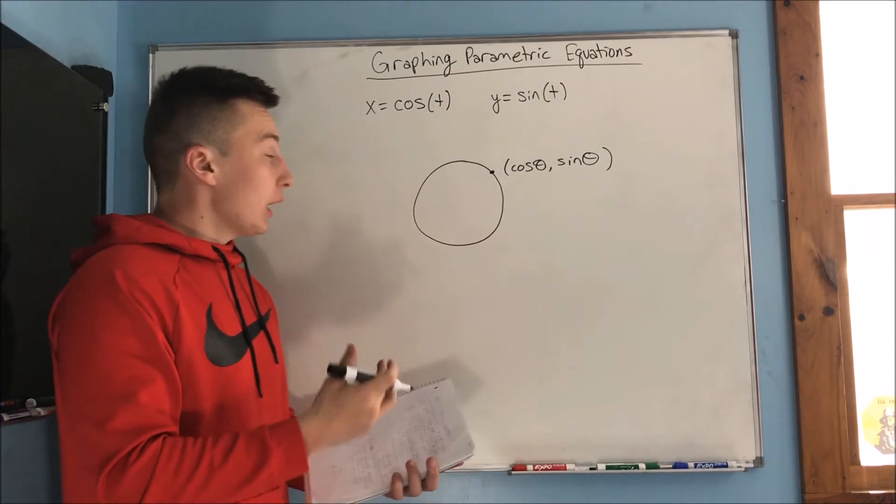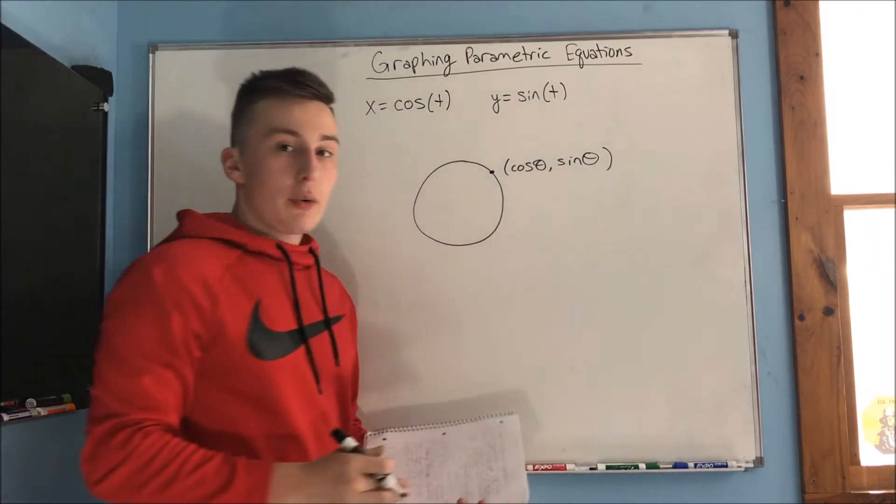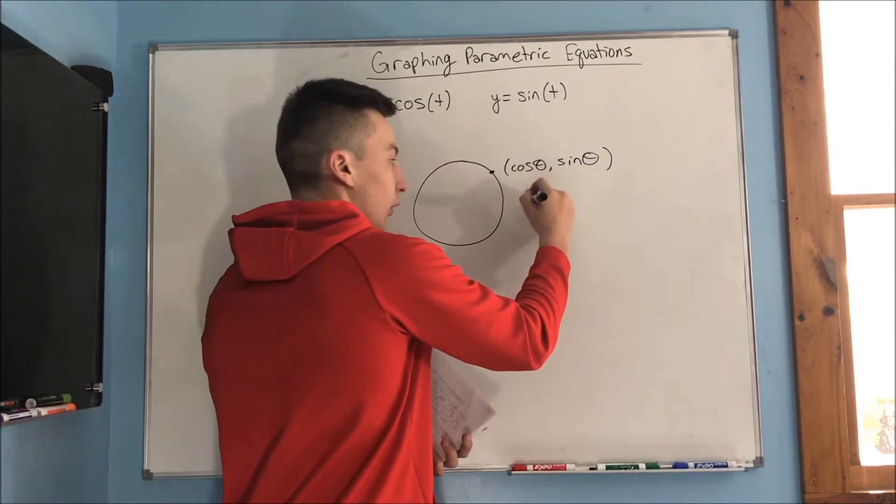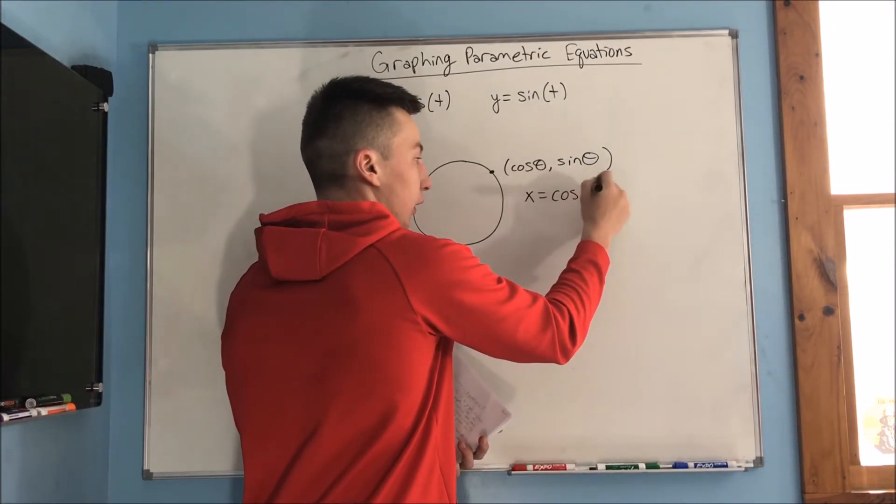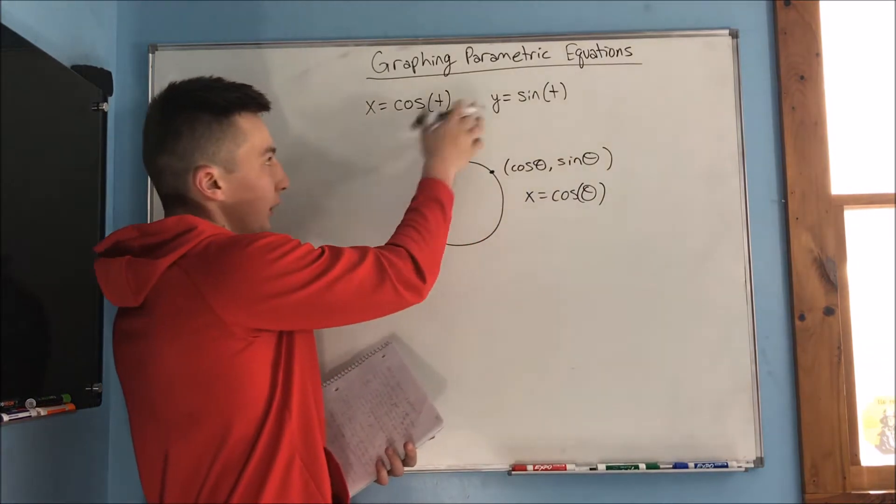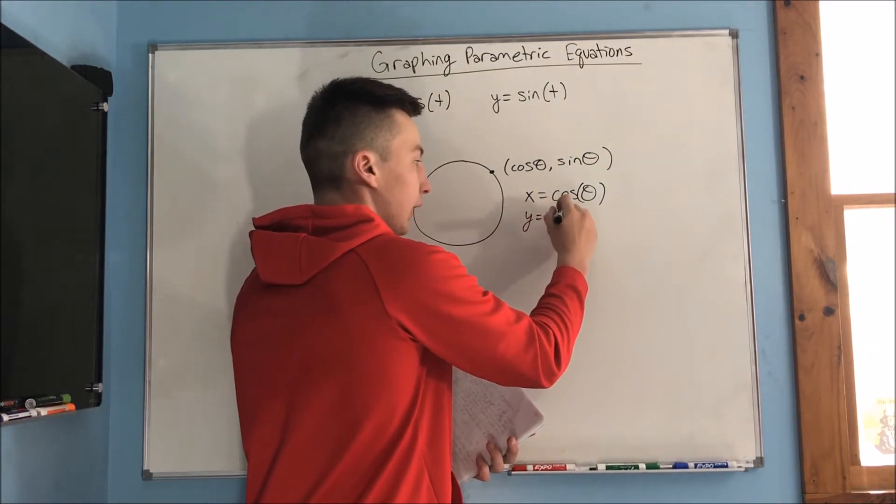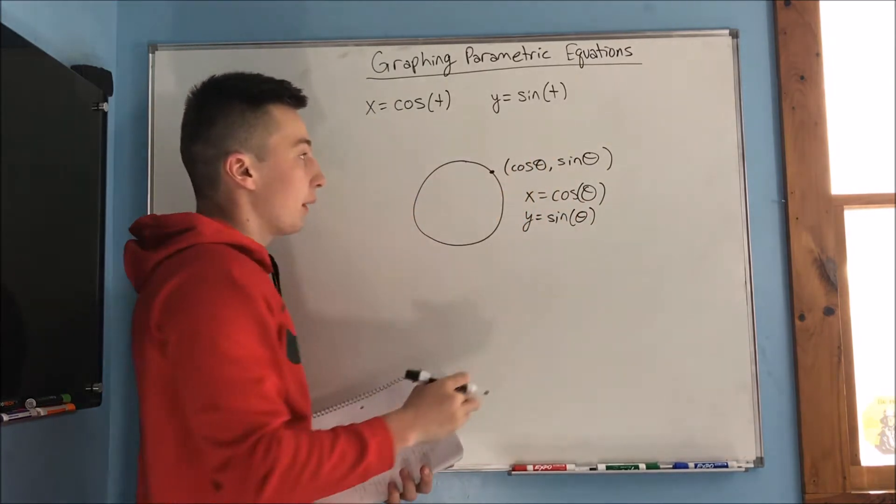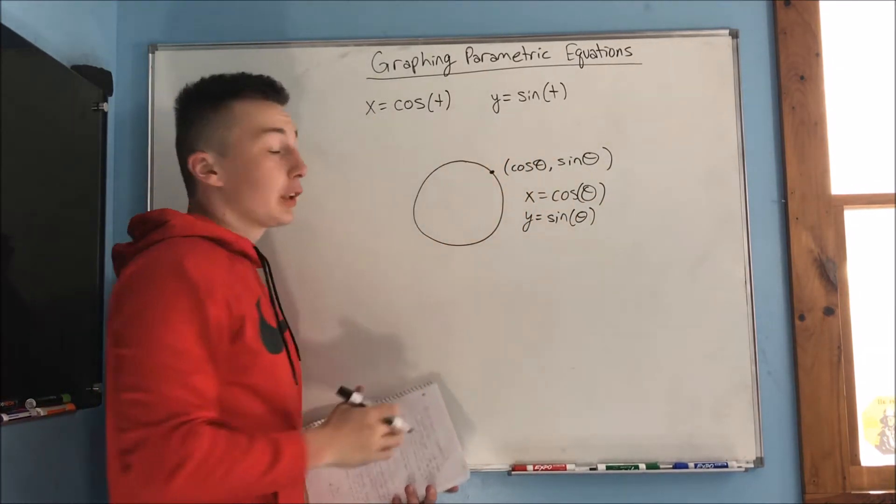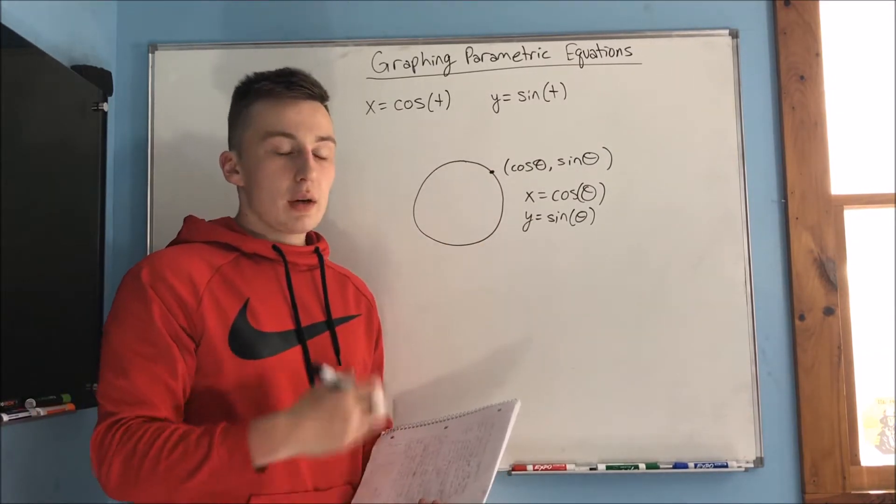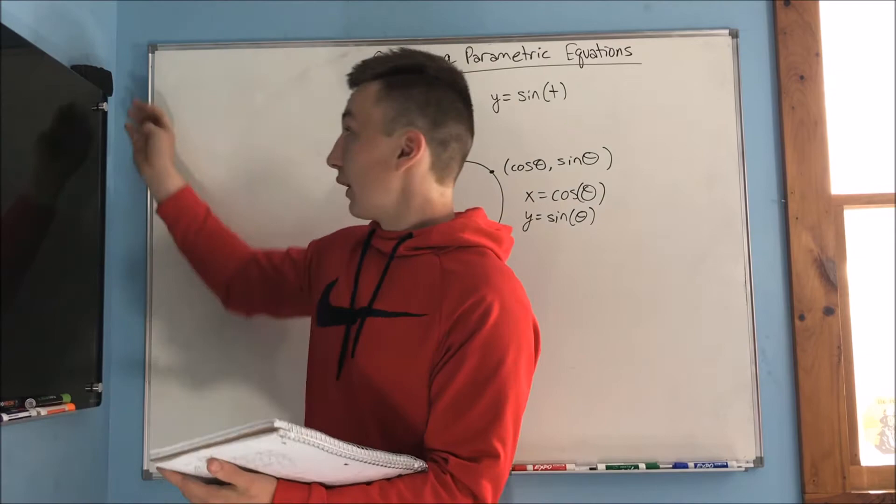And basically, you're using parametric equations here. Hopefully you remember that. Your x was cosine theta, that's what we have up here, we just changed the theta to a t. And we also have y equal to sine of theta, which is what we have up here. So these set of parametric equations are defining the unit circle. And we'll see how that works in just a second here.